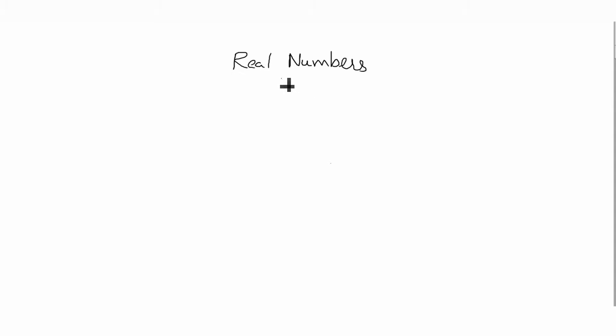Real numbers can be classified into two types. The first one is rational numbers, and the second one is irrational numbers.